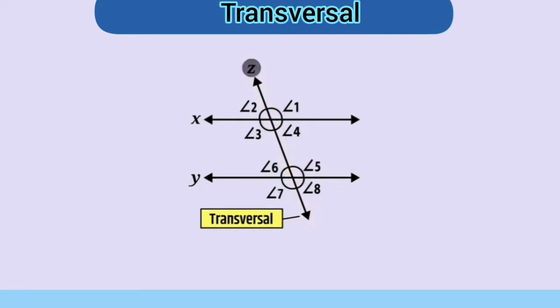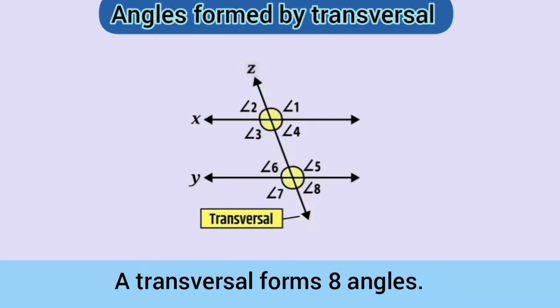Transversal Z forms eight different angles with line X and line Y. Let us discuss them one by one — angles formed by transversal.